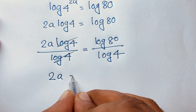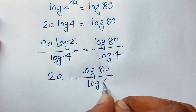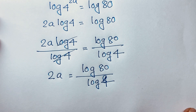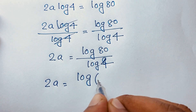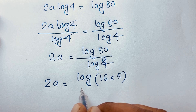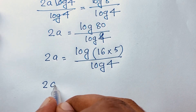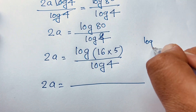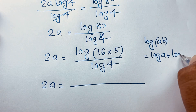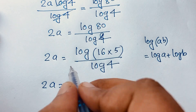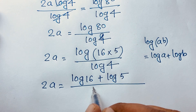The log 4 terms cancel out, leaving 2a equals log 80 over log 4. Now, log 80 can be written as log(16 times 5) over log 4. Using the rule log(ab) equals log a plus log b, this becomes log 16 plus log 5, all over log 4.